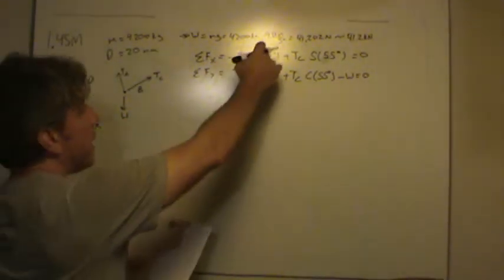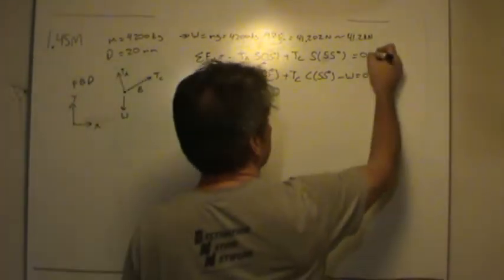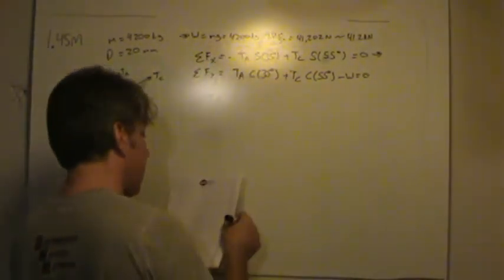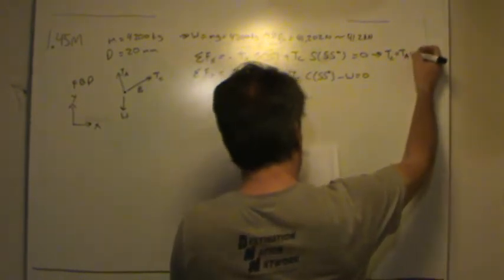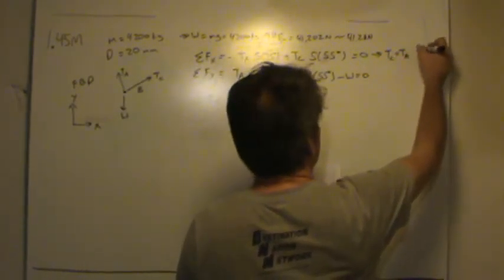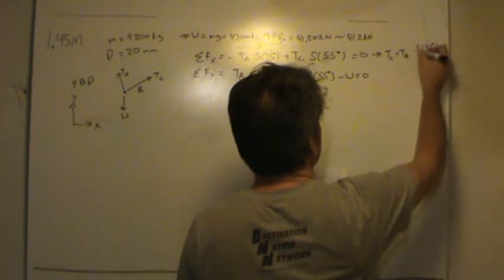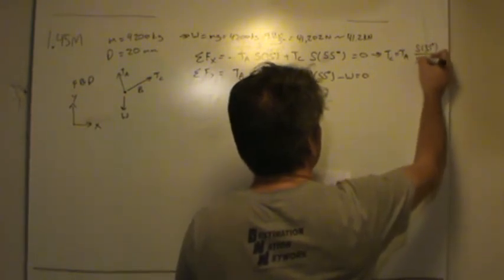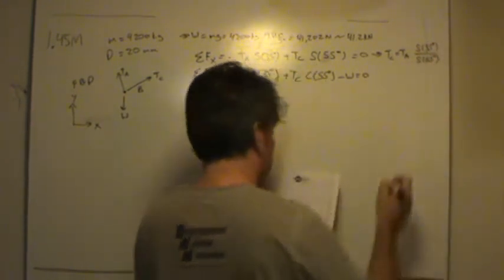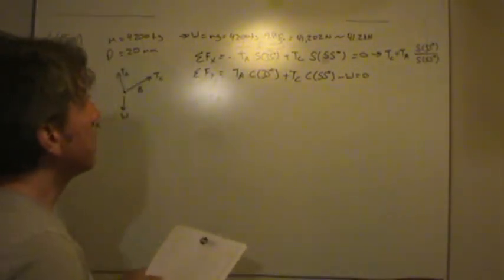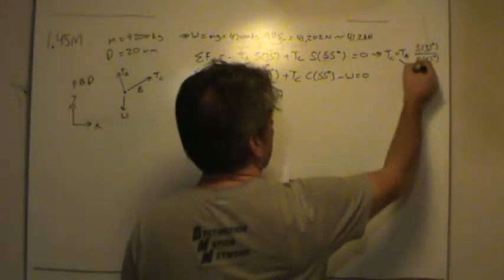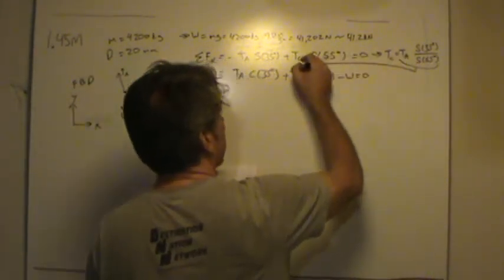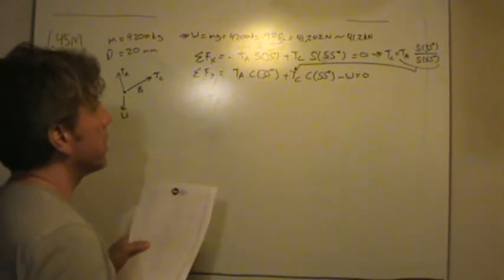Okay, now I'd like to combine these two together. The way I did that is I solved for TC. It's pretty simple. TC is TA multiplied by sine of 35 degrees divided by sine of 55 degrees. So let's take that equation, and we'll plug it in.